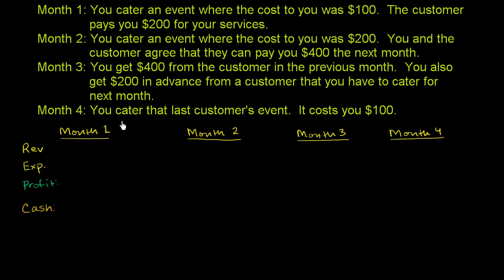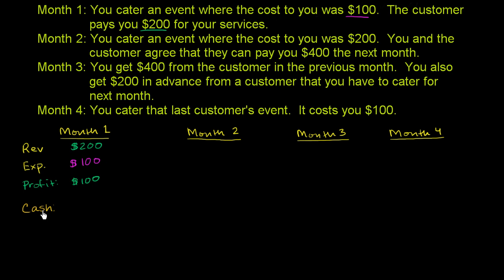We're going to assume we start off with no money. In month one, you cater an event where the cost to you was $100. The customer pays you $200 for your services — maybe $200 ahead of time so you have the cash to go buy the food and paper cups and plates. So you get $200 in revenue on a cash basis, and you have to spend $100 on supplies, plus maybe hire some help. Your profit is $100, and your cash at the end of month one is $100.